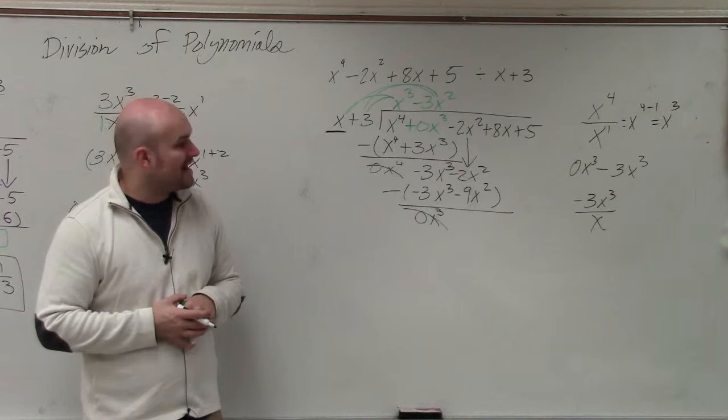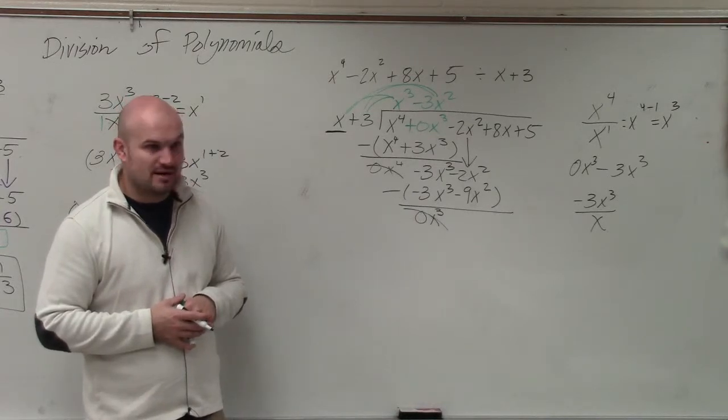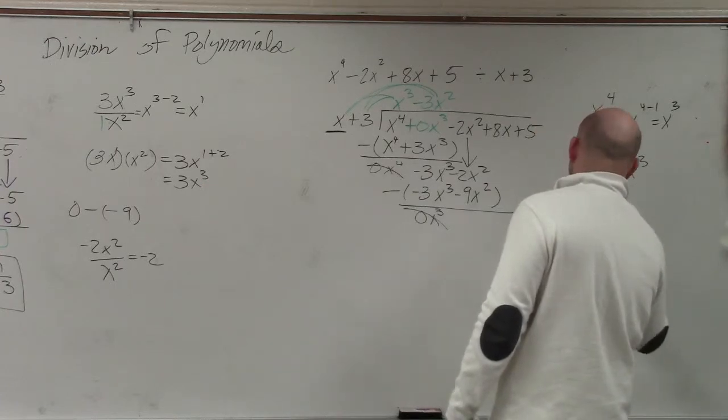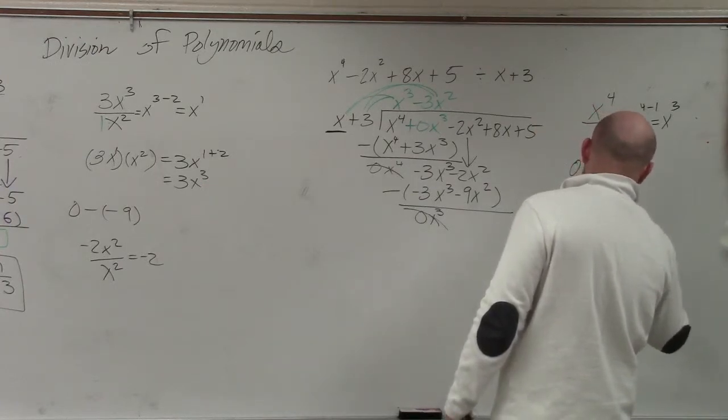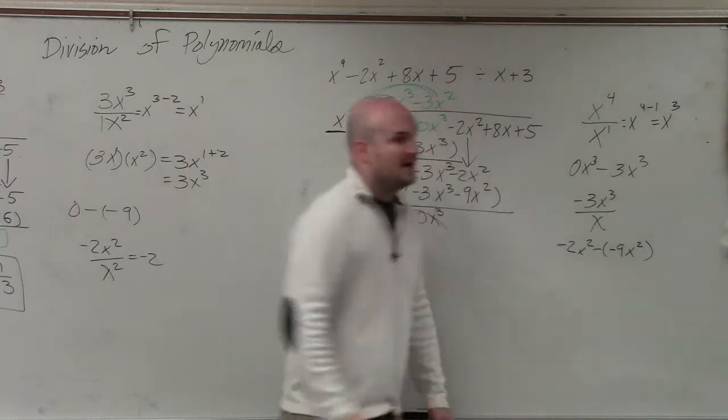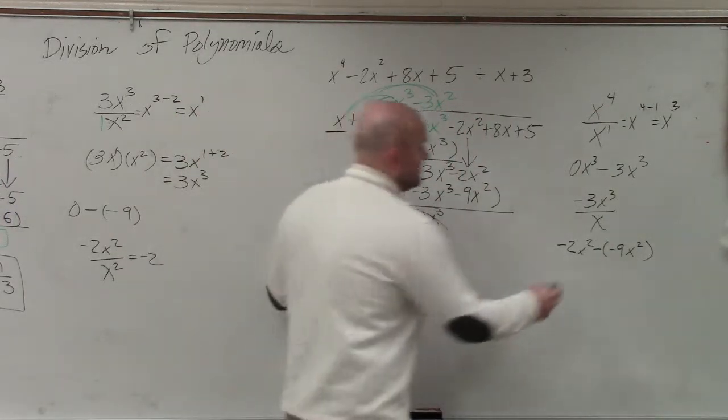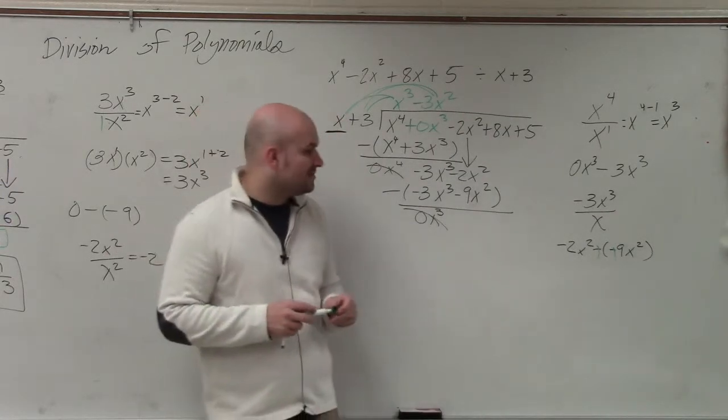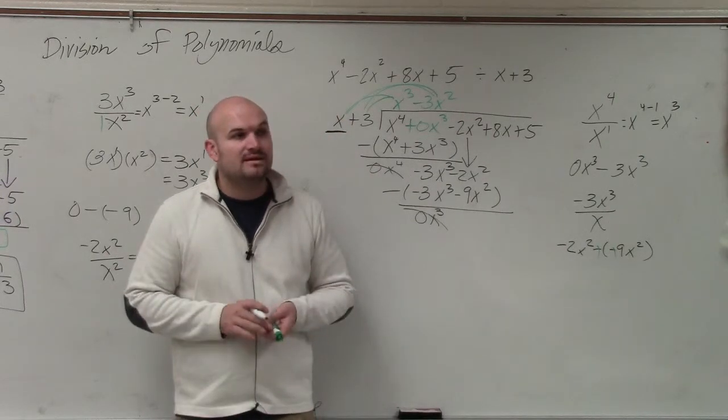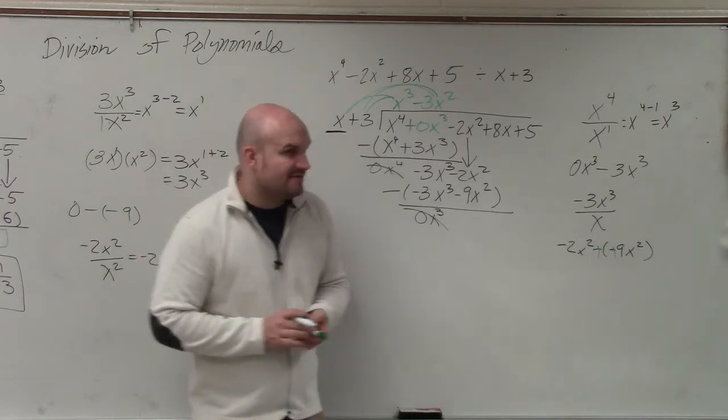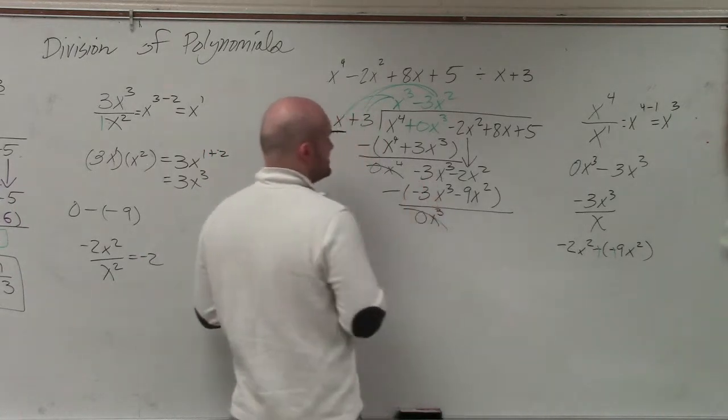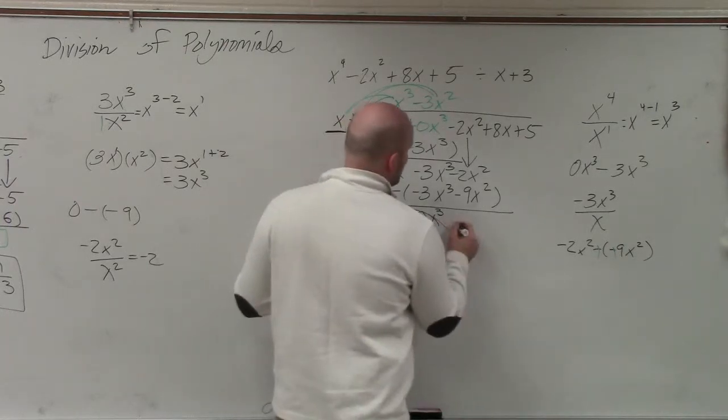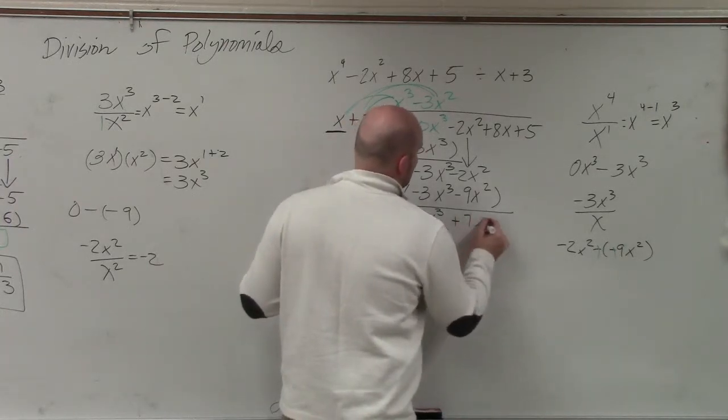Negative 2x squared minus a negative 9x squared. Again, if you're having trouble, write it to the side. What's minus a negative? It's the same thing as a double negative. So what's negative? The same thing as adding. So what's negative 2x squared plus 9x squared? Please, yes, 7x squared. If you guys could please just continue paying attention for this, and then we'll address other things later. So that becomes a positive 7x squared.